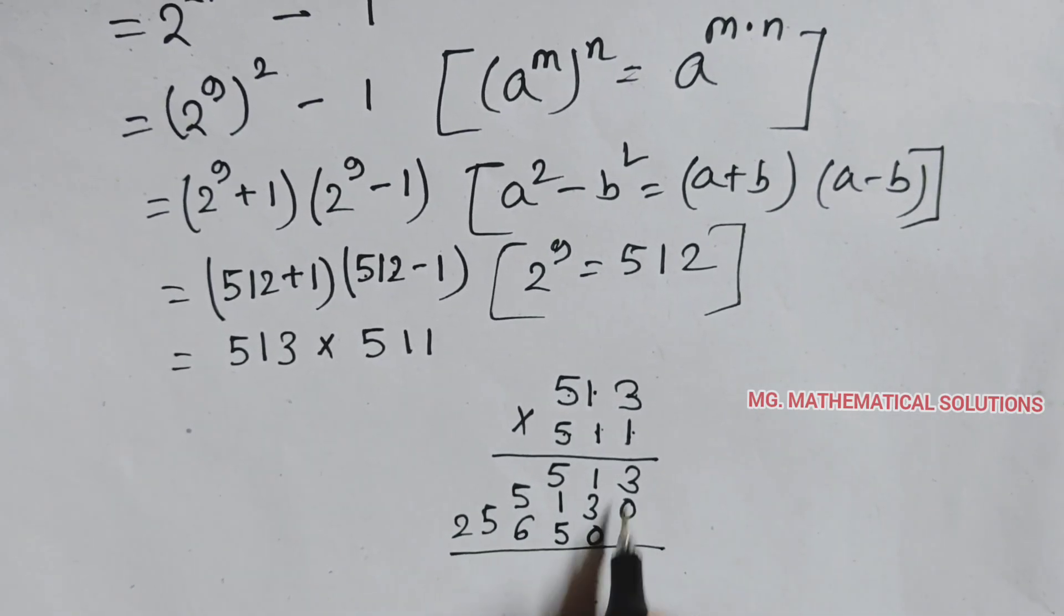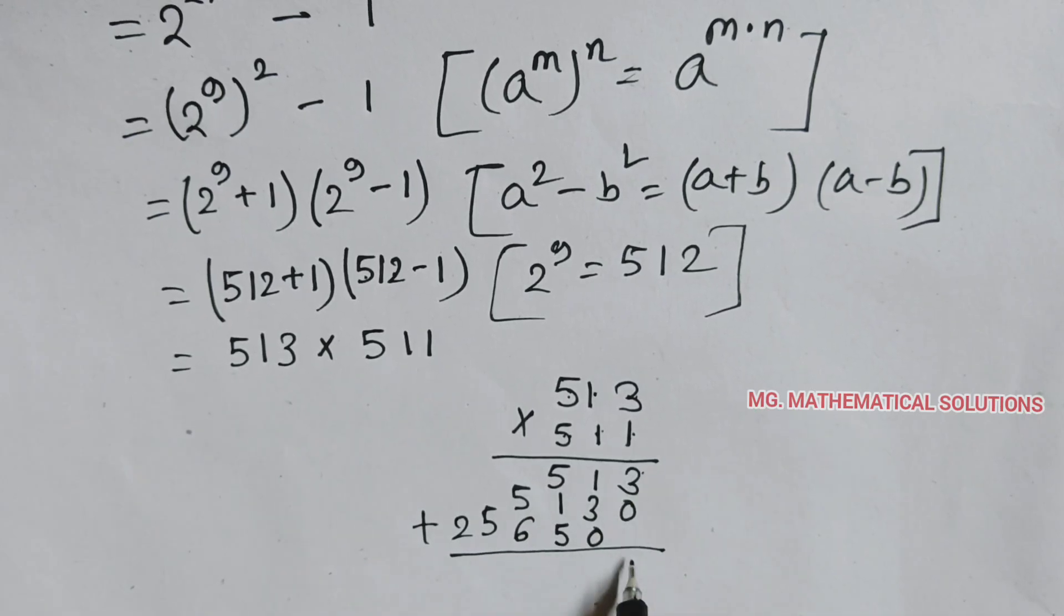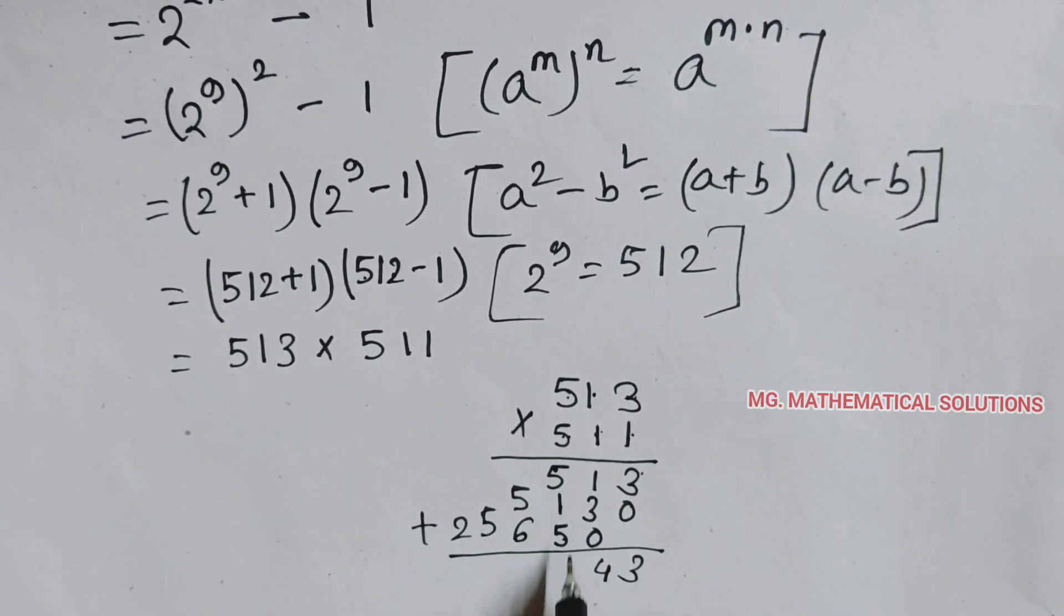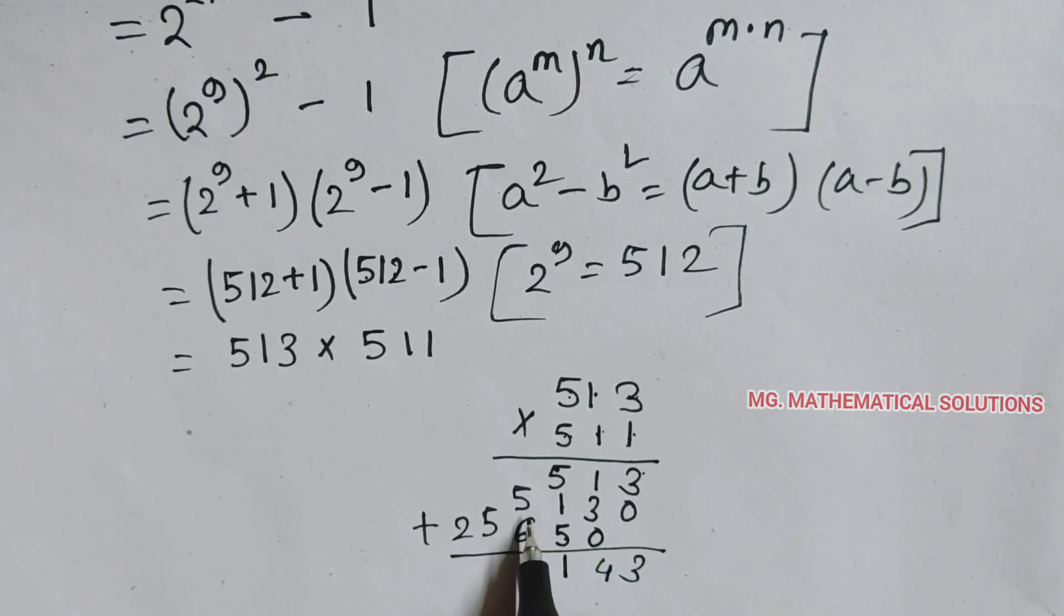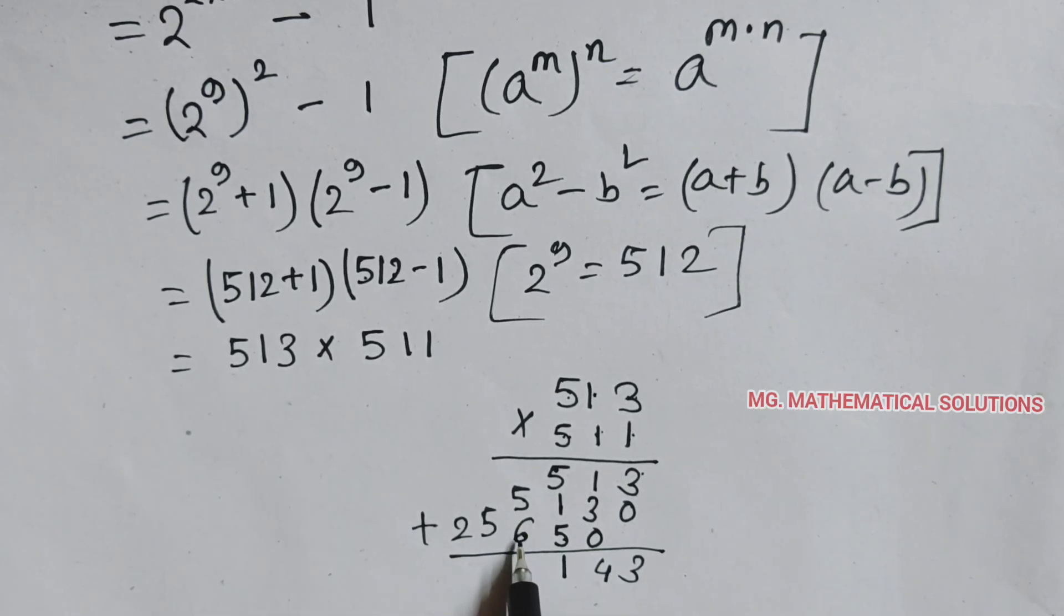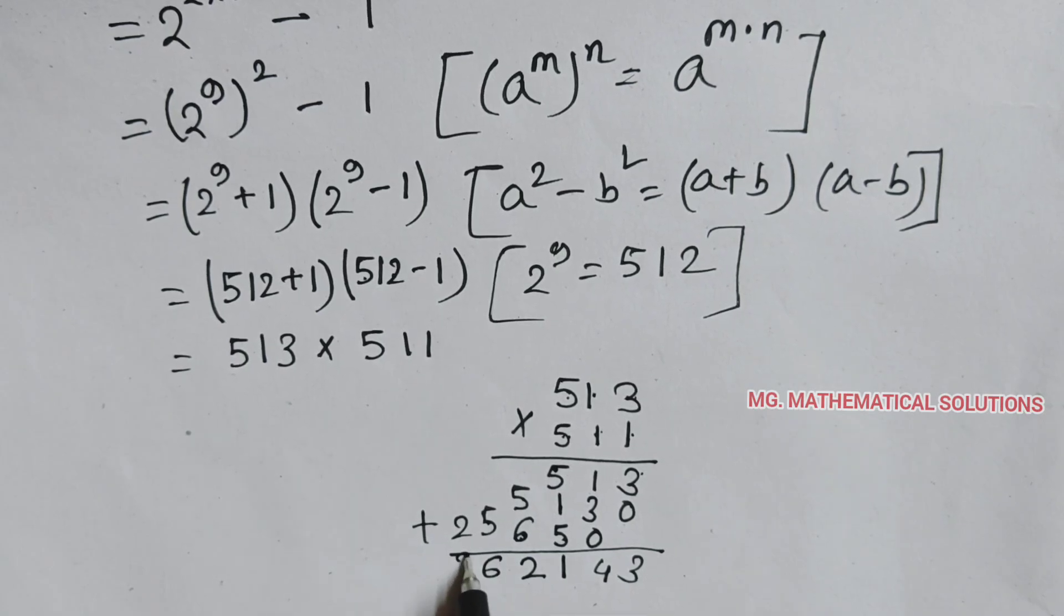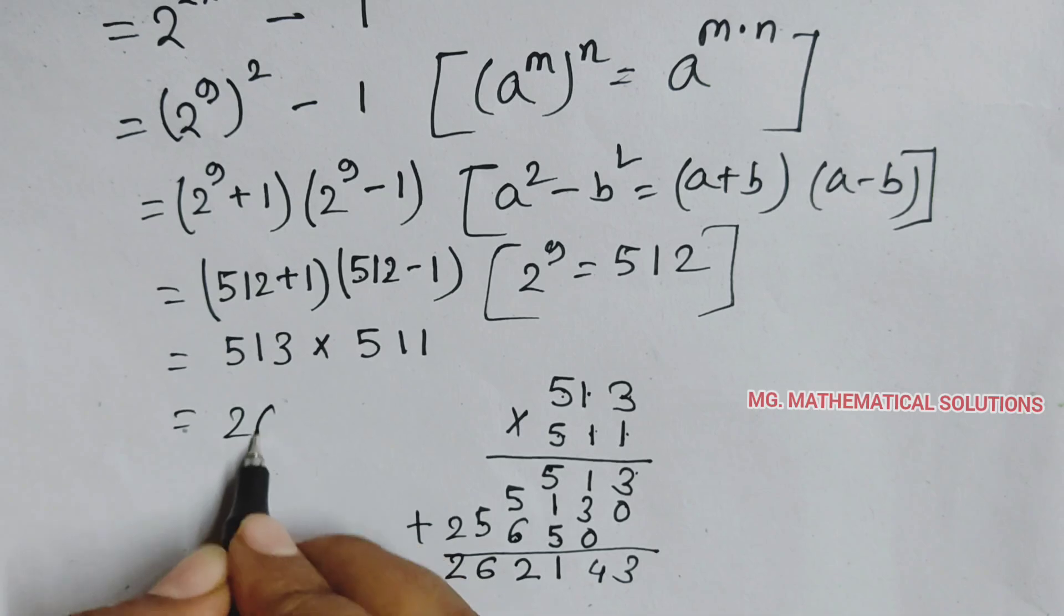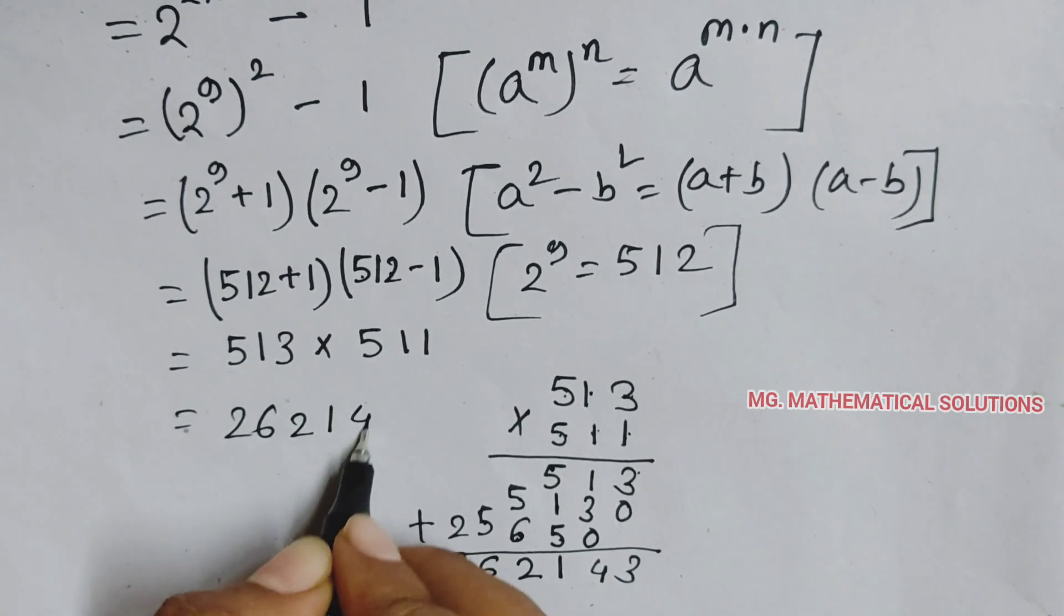Plus 3, 3, plus 1, 4, 5 plus 5, 10, plus 1, 11, 5 plus 6, 11, plus 1, 12, 5 plus 1, 6, 2. So 513 times 511 equal to 262,143.